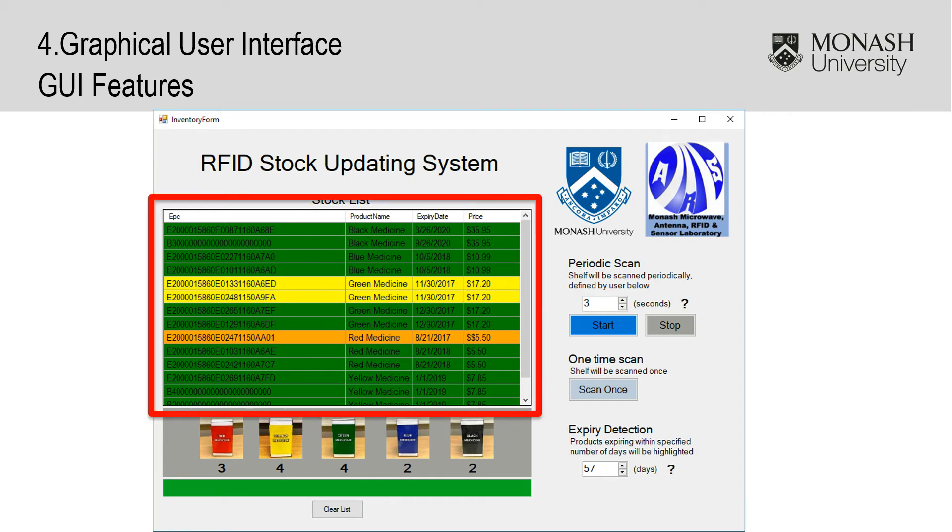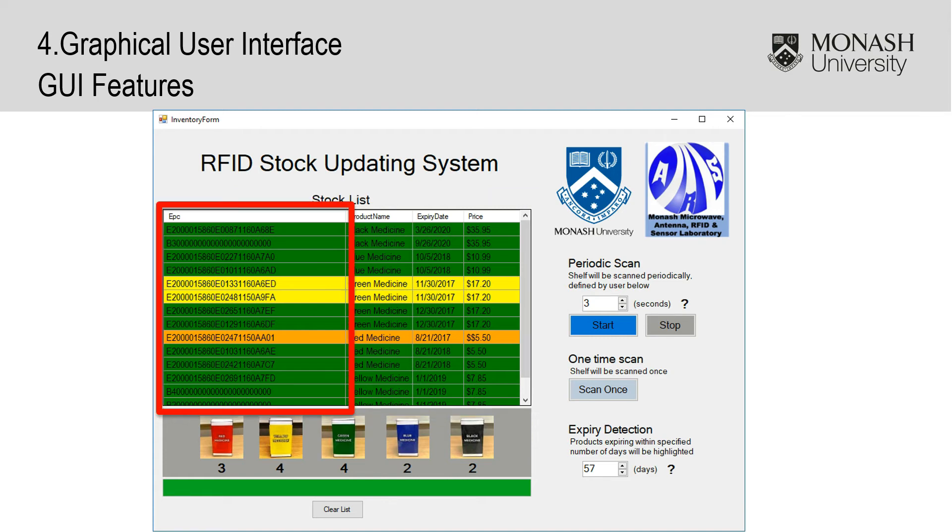The second main component of the GUI is the stock list. This stock list is used to display all scanned information obtained from tagged medicines. Information displayed includes EPC, product name, expiry date, and product price. To make it easier for a user to identify the expiry state of a product, expired medicines will be highlighted orange, non-expired medicines will be highlighted green, and medicines within the early expiry detection range will be highlighted yellow.